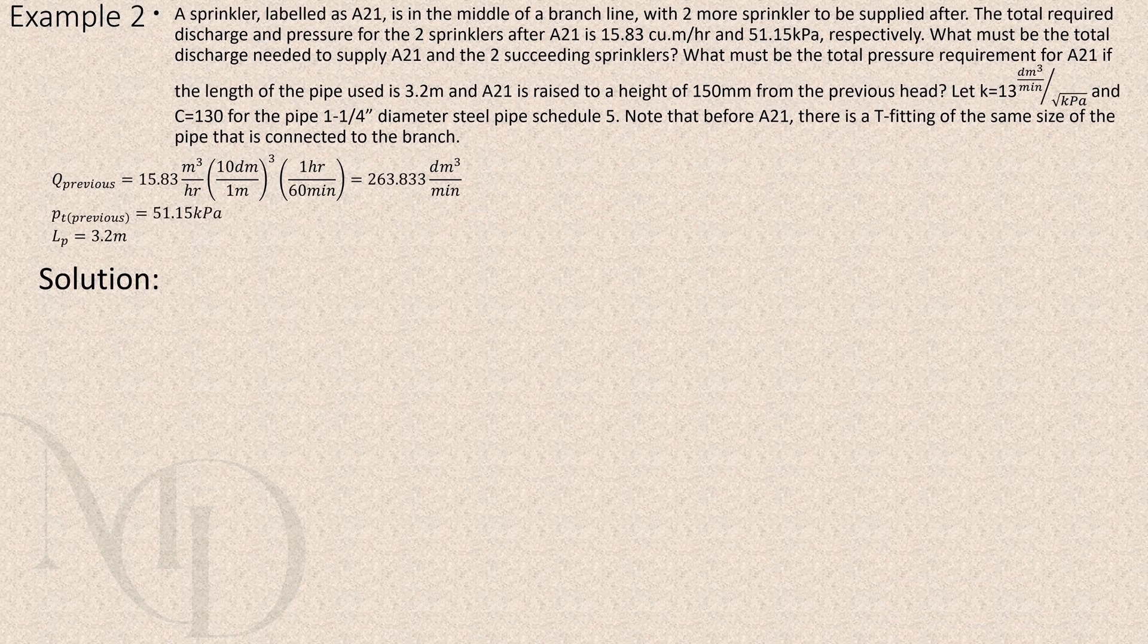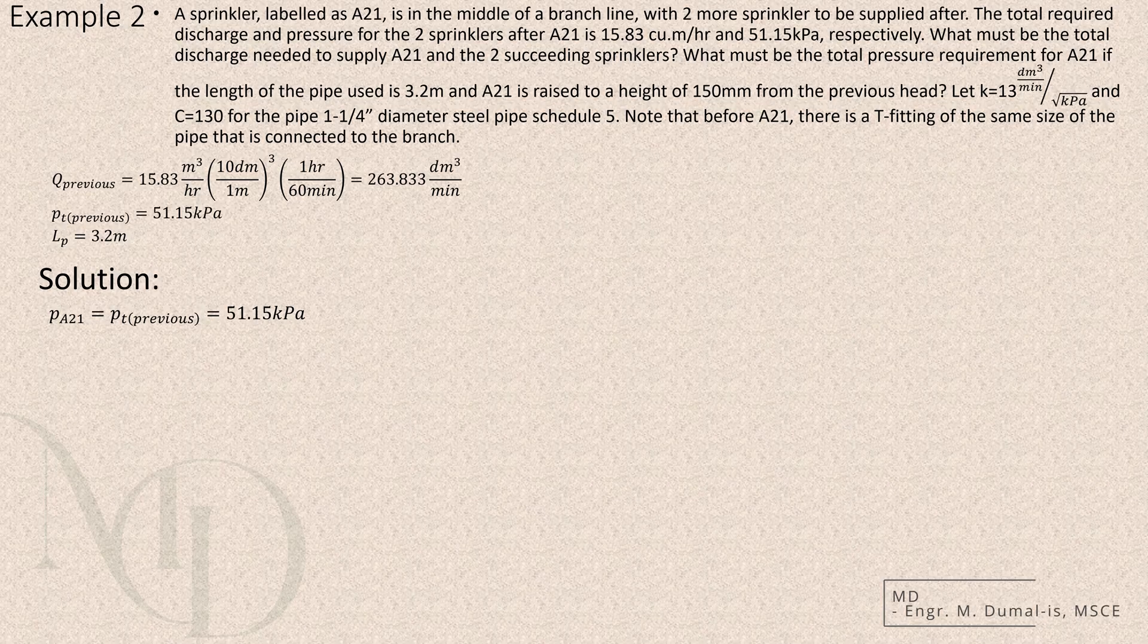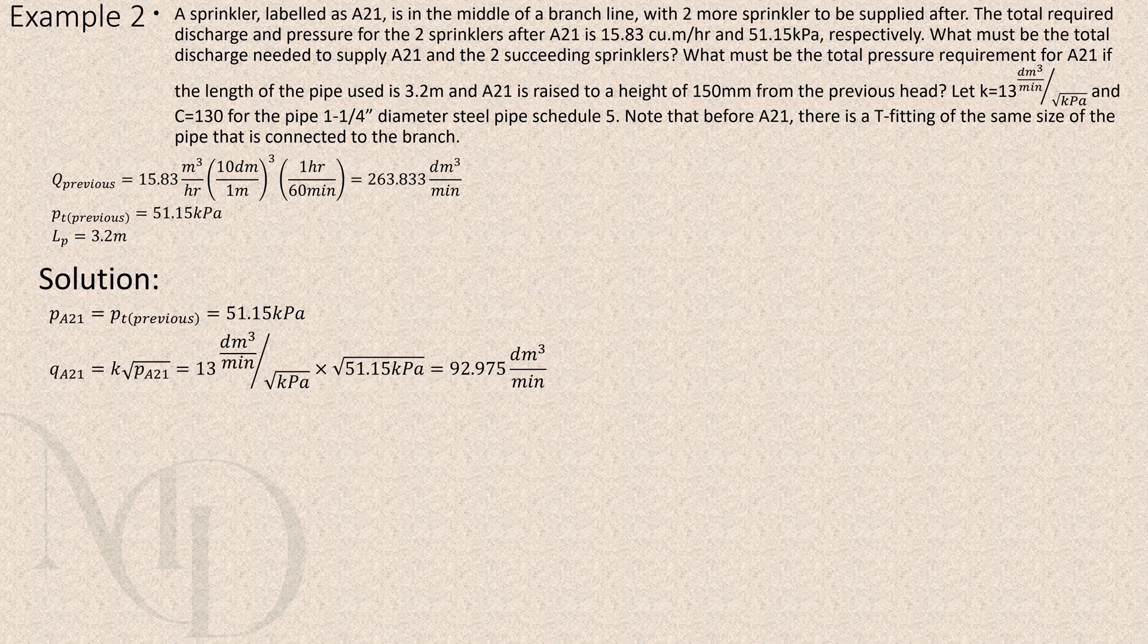Alright, let's now proceed with the solution for problem 2. First, we assign the pressure of the pipe by using the same pipe data from the previous example since they are connected in series. This allows us to maintain consistency in our hydraulic calculation. Next, we use the k-factor formula to solve for the discharge of the intermediate sprinkler, which in this case is capital A21.